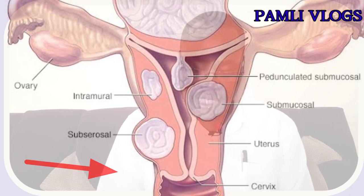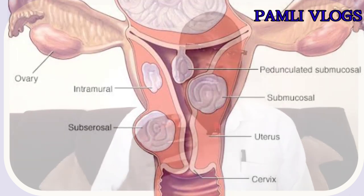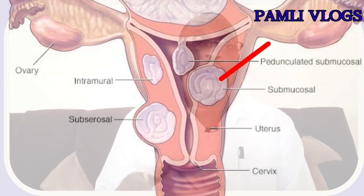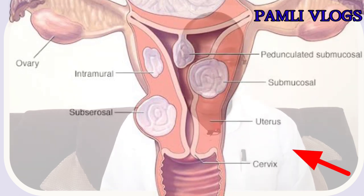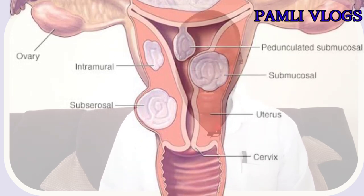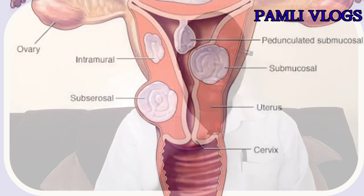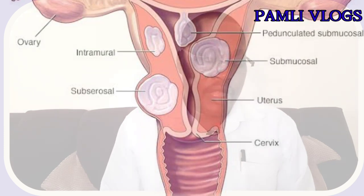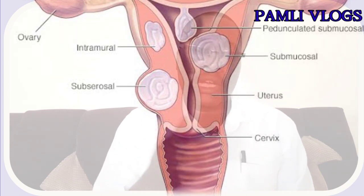Then we have subserosal fibroids, located at the surface of the uterus or outside the uterine wall. These may grow outwards and sometimes form a narrow stem — these we call pedunculated uterine fibroids. We also have submucosal fibroids, located beneath the endometrium or mid-muscle of the endometrial layer of the uterus. These can grow and destroy the uterine cavity; they are very prone to bleeding and causing infertility, and can also be pedunculated.